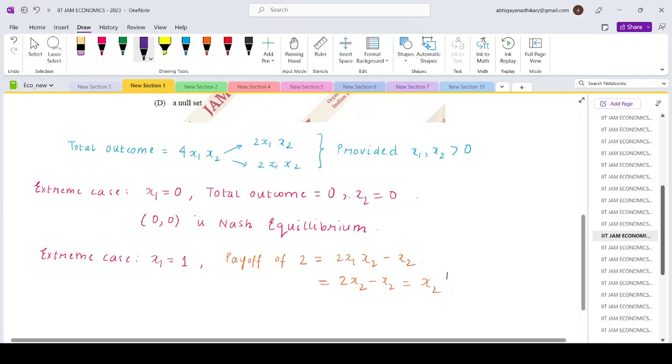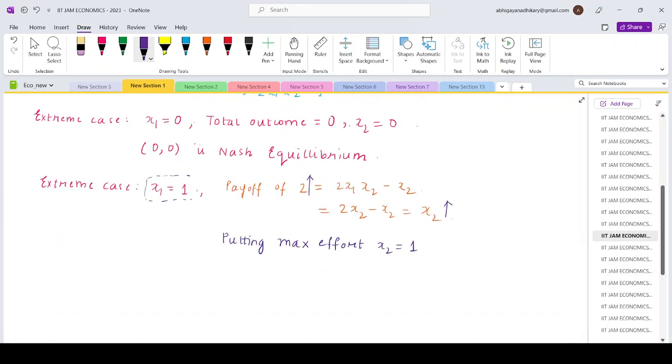So higher the amount of effort he puts, higher will be the payoff that he gets given that player 1 plays with full effort. So that means he will be putting maximum effort. So x2 will equal 1. So if player 1 is putting maximum effort x1 equals 1, the best response for player 2 will always be to put maximum effort x2 equals 1. So that means (1,1) is also a Nash equilibrium.